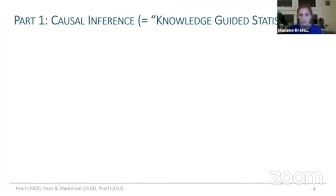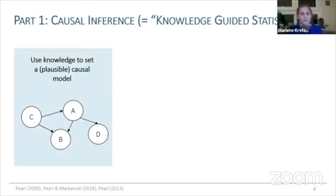Causal inference is what one could also call knowledge-guided statistics. Very simply speaking, it sets the rules of when we can actually quantify causal effects from data. What is required as the first step of any causal inference analysis is using our knowledge to set a plausible causal model.